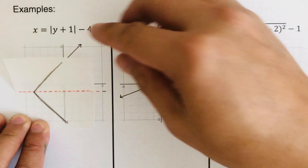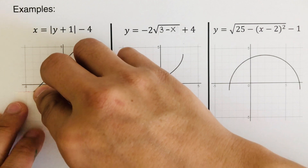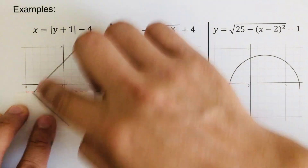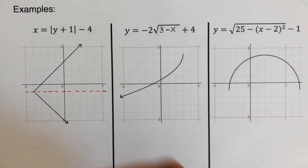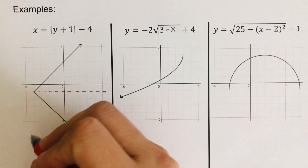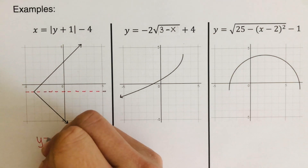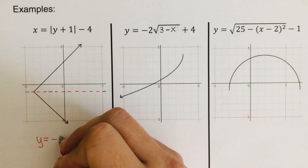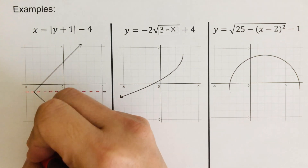That means this line of symmetry actually divides this graph into two identical parts. So our equation for this is y is equal to negative one. That is the equation of the line of symmetry.